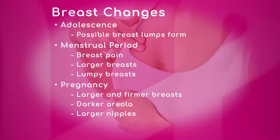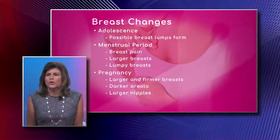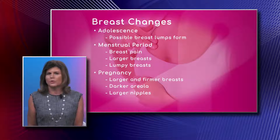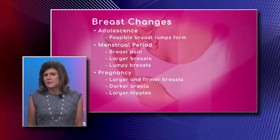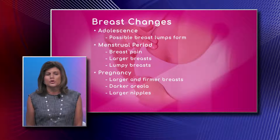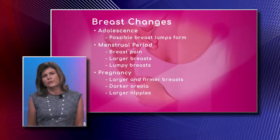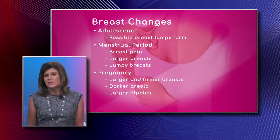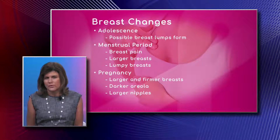The first stage is adolescence, where possible breast lumps can form. Usually the nipple protrudes a little more — it's puberty, if you will. The breast can go through normal changes throughout a woman's different stages of life, and during adolescence that's typically the first time we see visible changes of breast development.